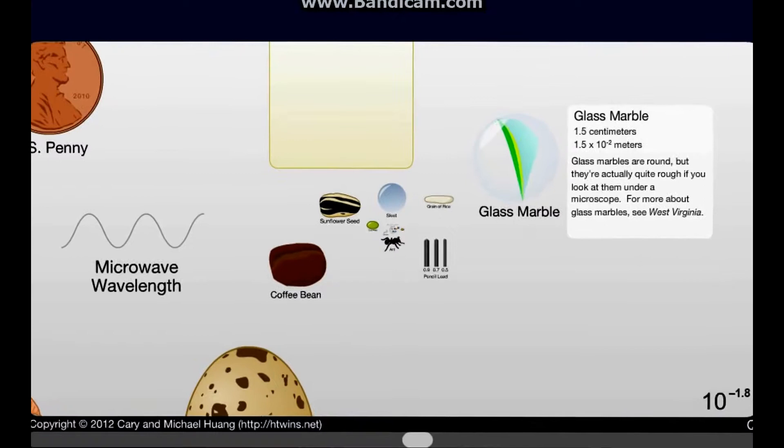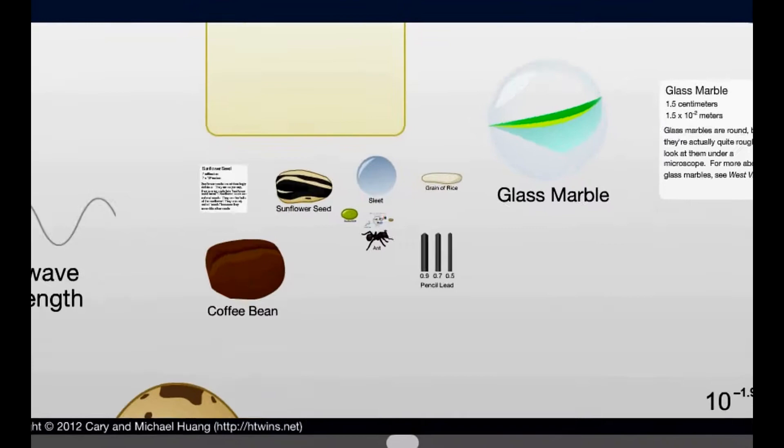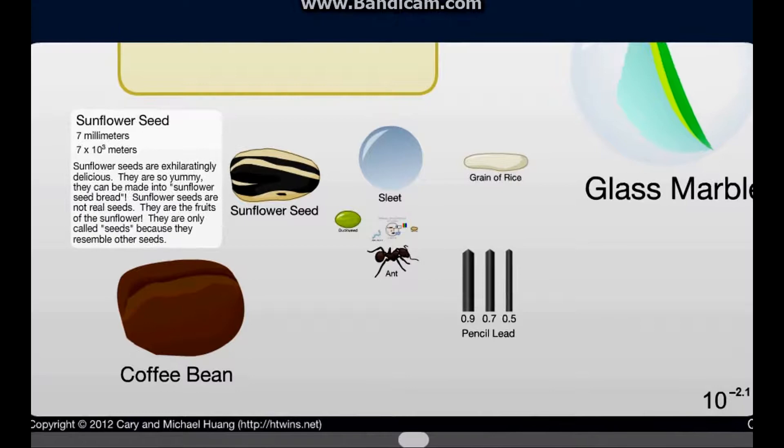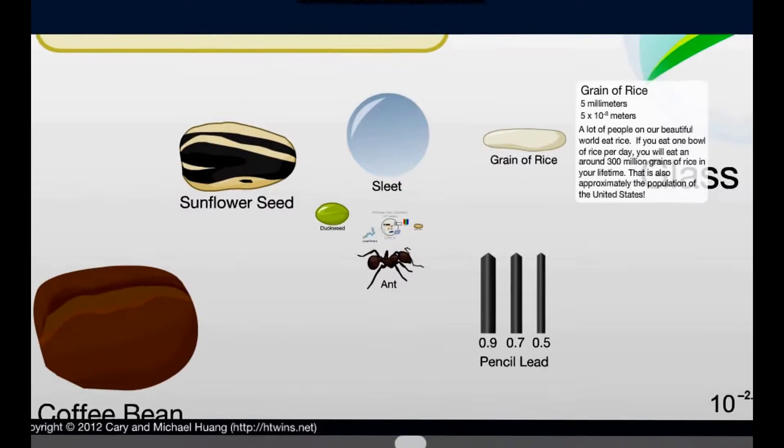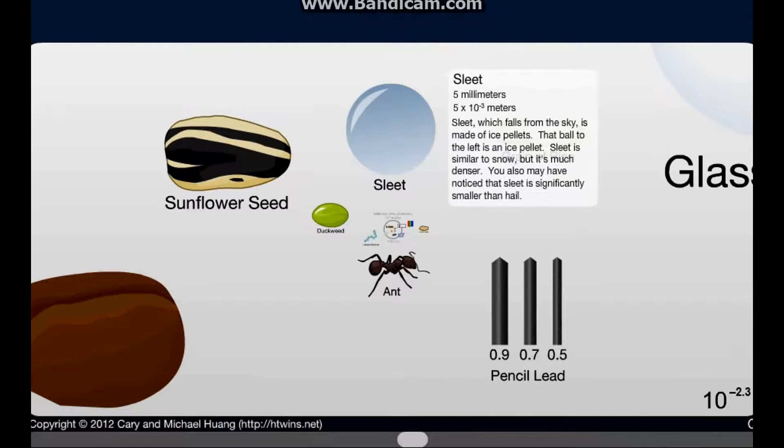Because then you got the marble right here, which is 1.5 centimeters. I never really thought about that. And then you got yourself a sunflower seed. And that is bullshit. Have you seen some of the sunflower seeds people make nowadays? They are gigantic. They are definitely bigger than this, definitely bigger than a grain of rice.